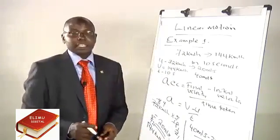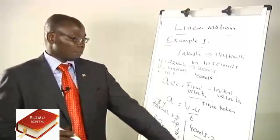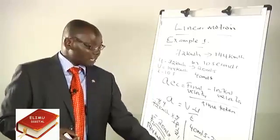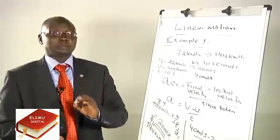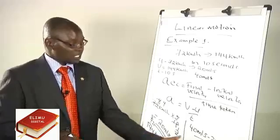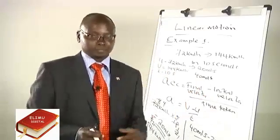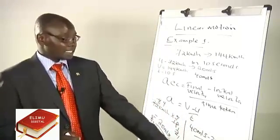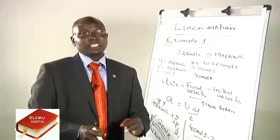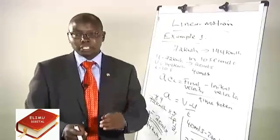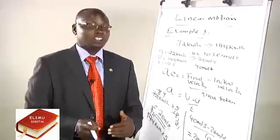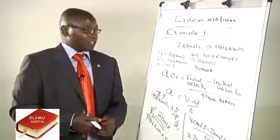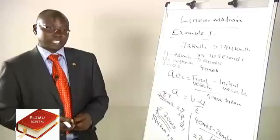The unit for measuring acceleration is meters per second squared, because velocity is meters per second and we are dividing by seconds again, so it becomes meters per second squared. This is a body that is increasing in velocity — 2 meters per second squared. In case we get a negative value, that shows the body is decelerating, what we call retardation or deceleration.